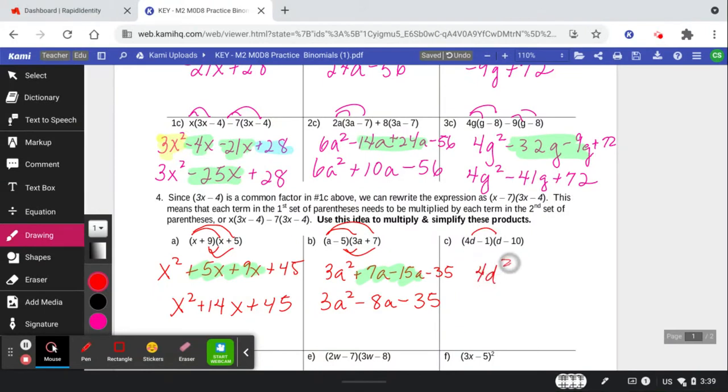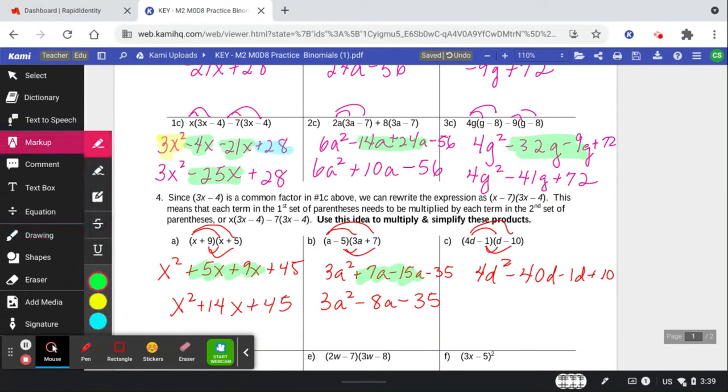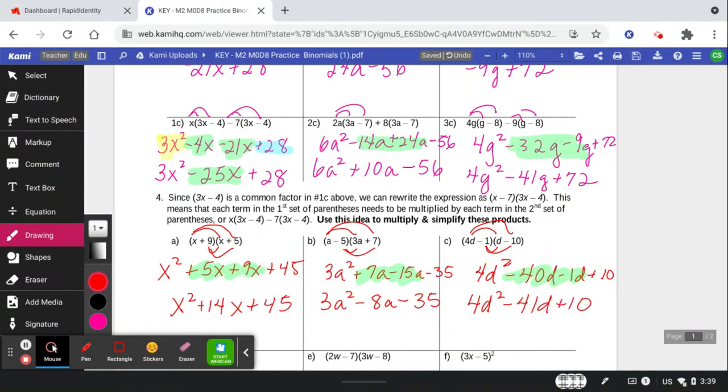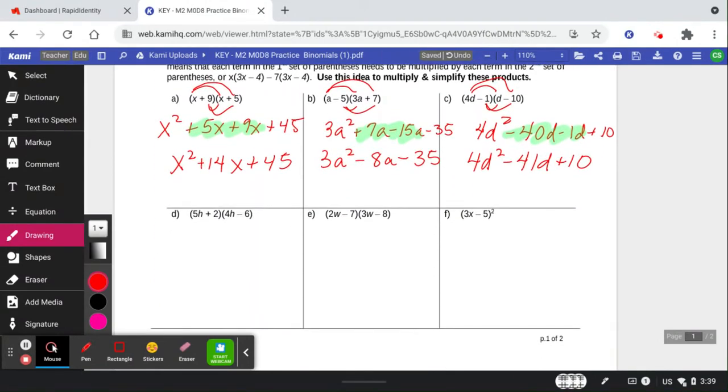Did you get 4d squared minus 40d minus 1d plus 10? Negative times negative is positive. 10 times 1. Combine those middle terms. Are you getting better at these? How are you doing?